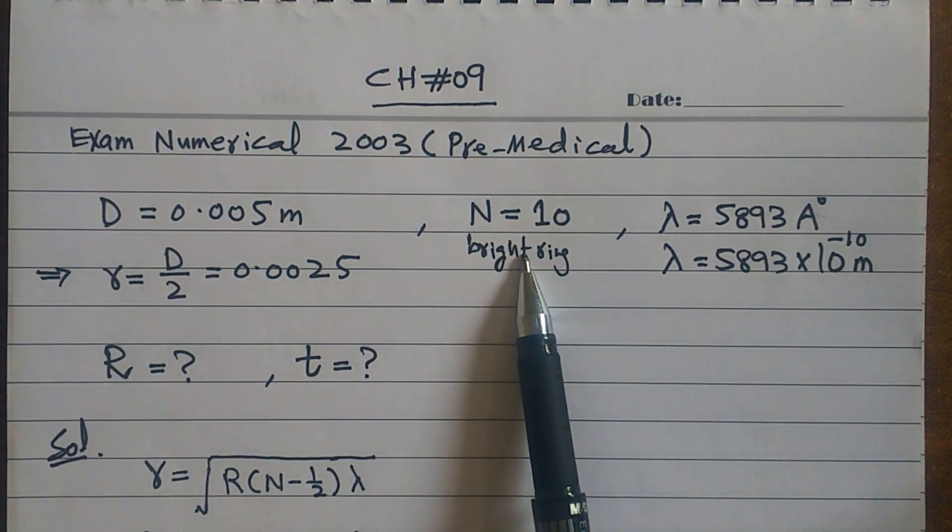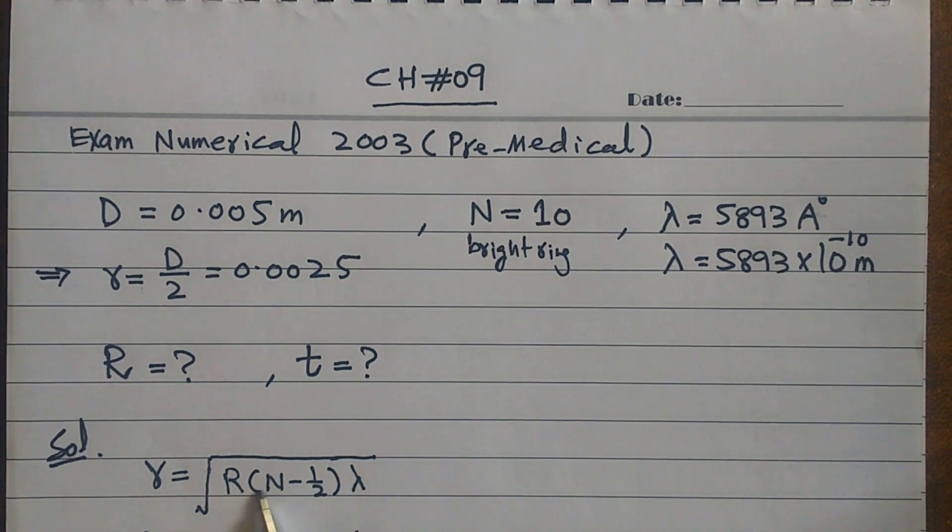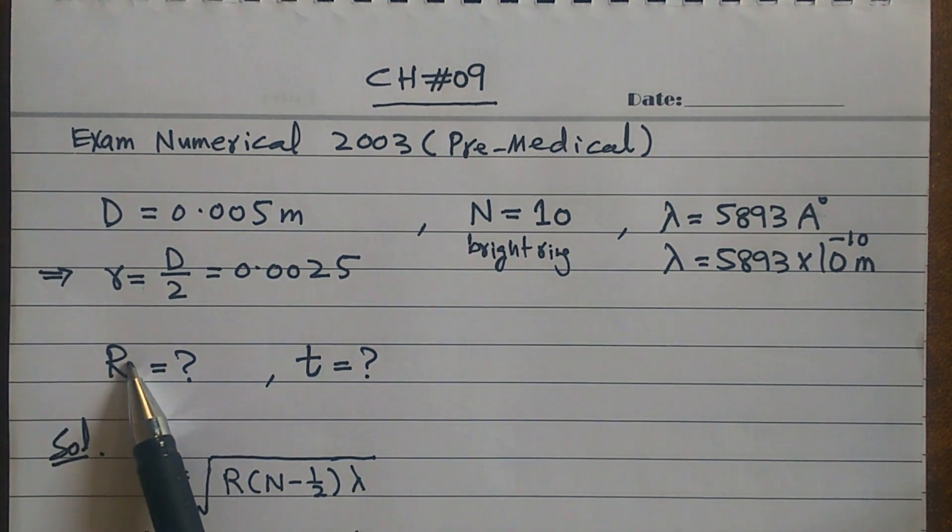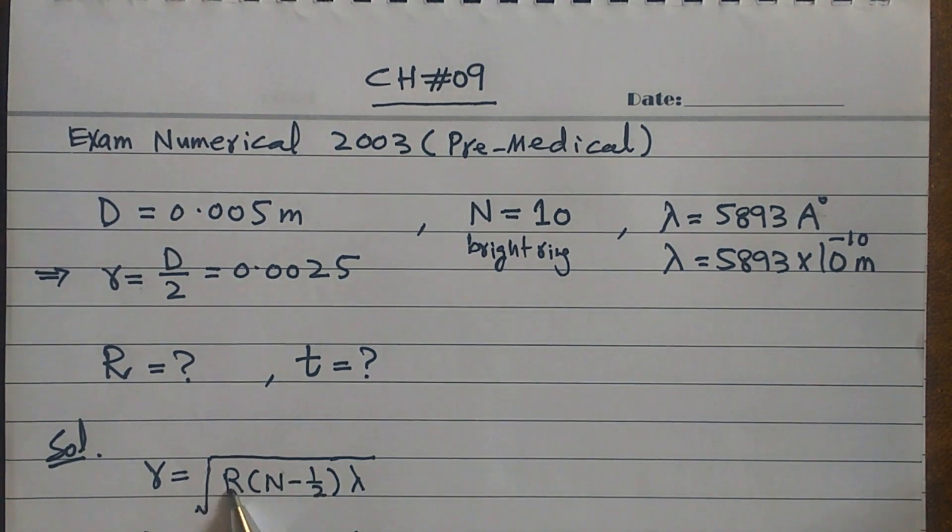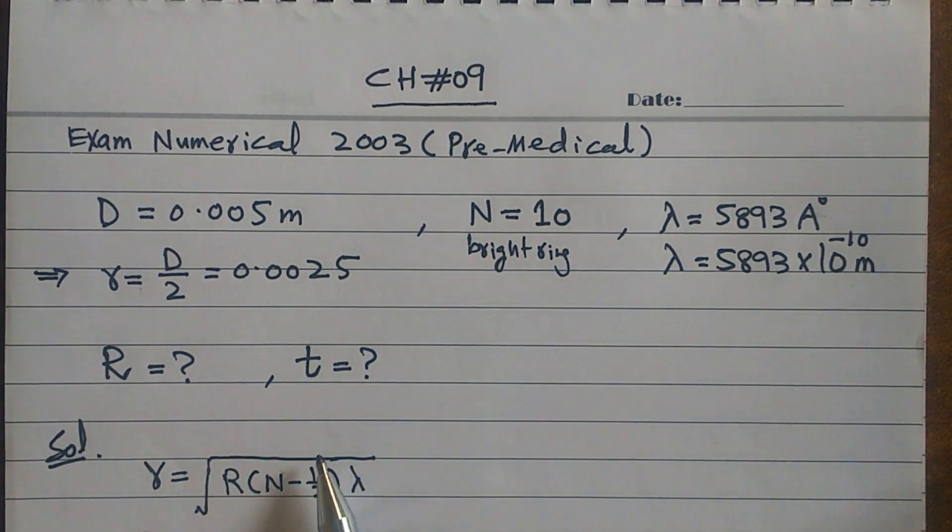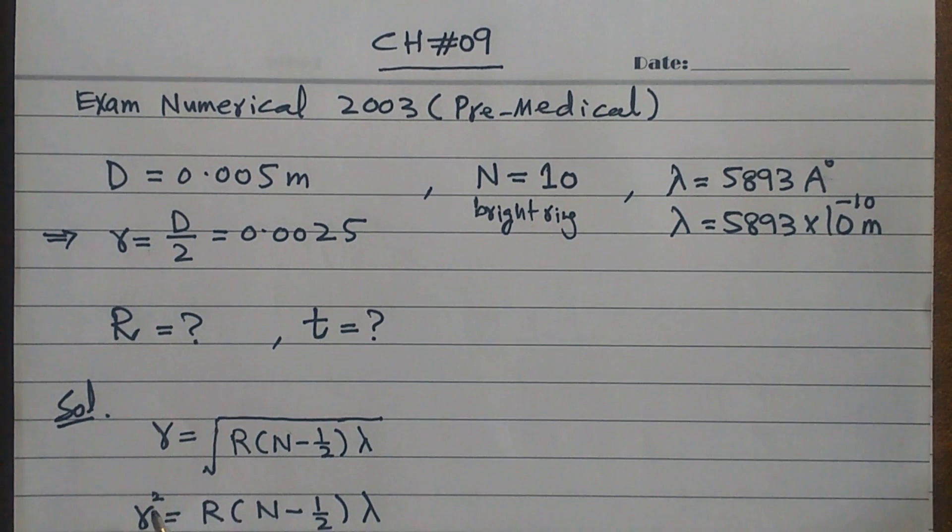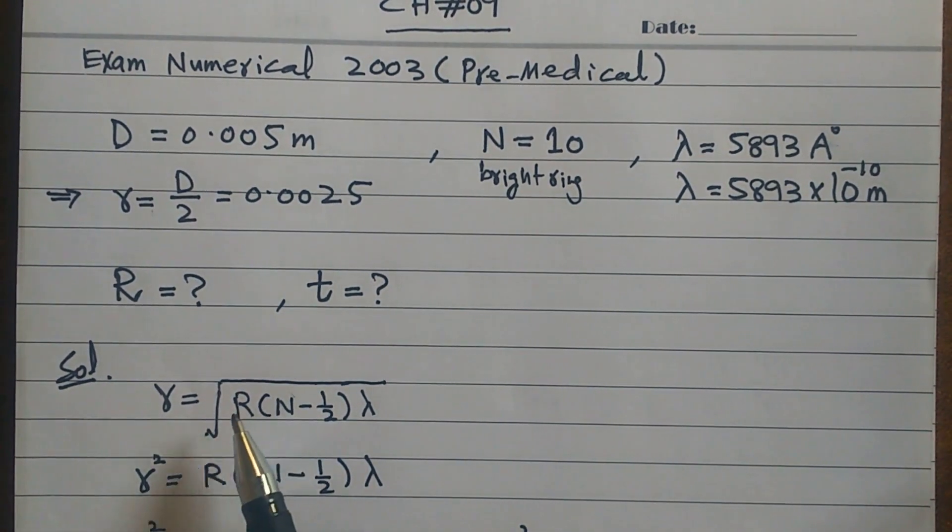Now it is bright ring. This is a simple formula that we have to apply because we want R, so we have to change it. We will remove the square root and I will make R the subject.